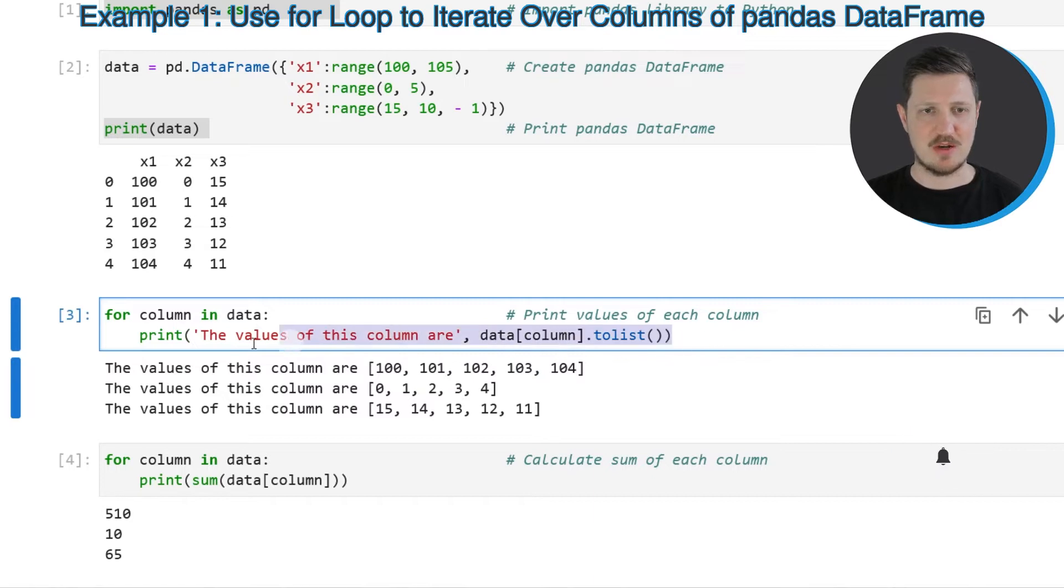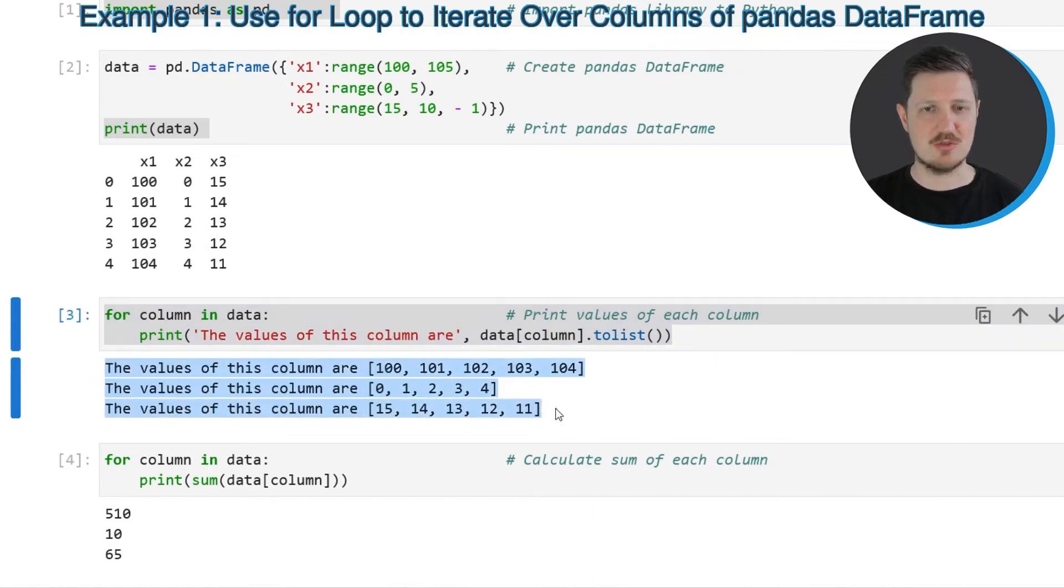So after running the third code box you can see that another output is returned. More precisely one separate output for each column in our dataframe. And as you can see each of these outputs contains a character string, the values of this column are, and then the values in this column as a list.